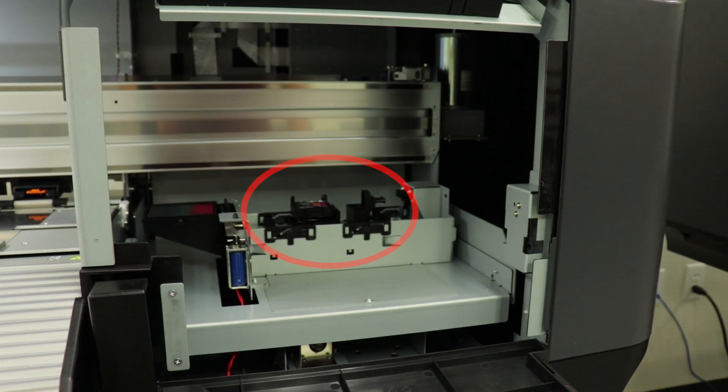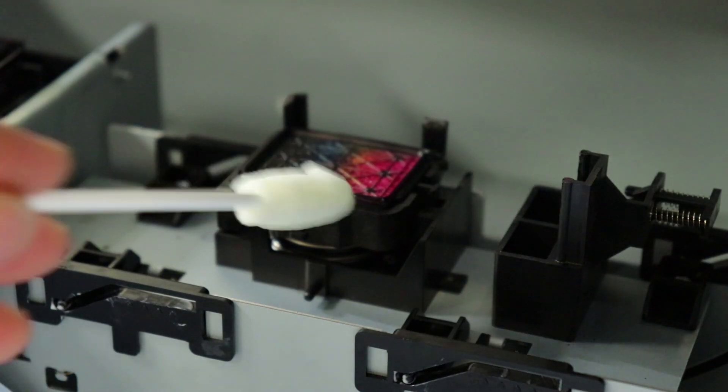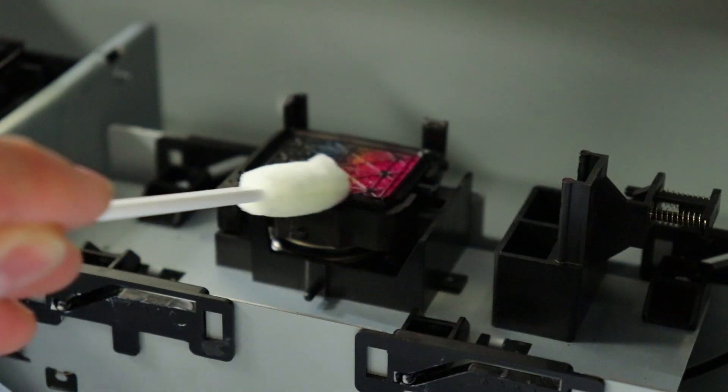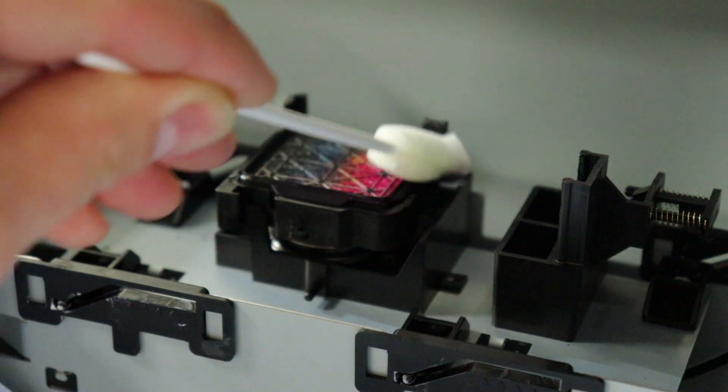The first thing we want to clean is the cap located here. Go ahead and use your swab and clean the rubber seal around the cap. Make sure to remove any dust or ink buildup that you might find.